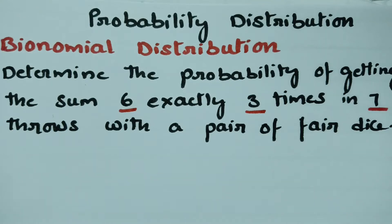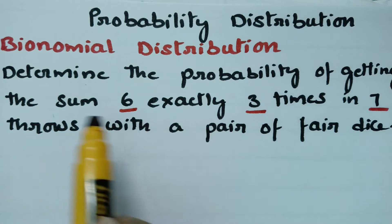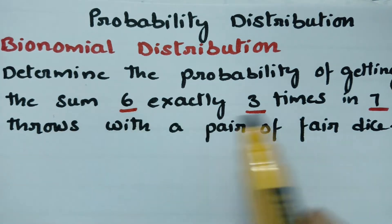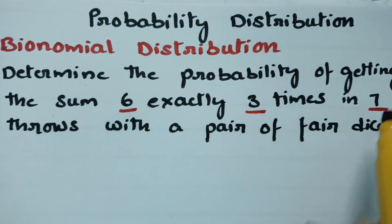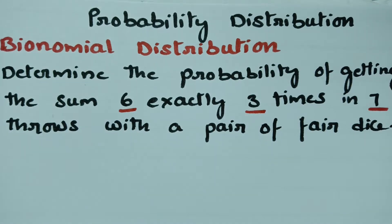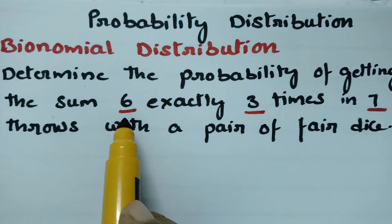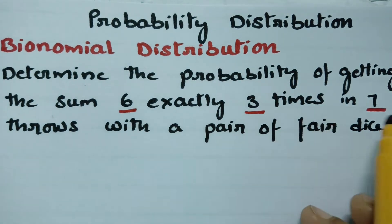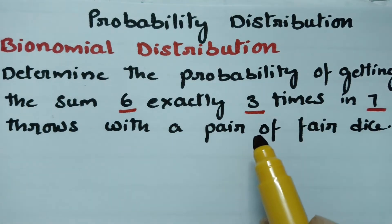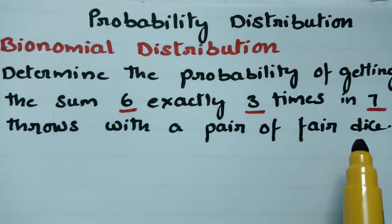Today's problem is on binomial distribution, which is related to probability distribution. We have to determine the probability of getting the sum 6 exactly 3 times in 7 throws with a pair of fair dice.